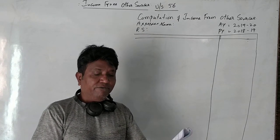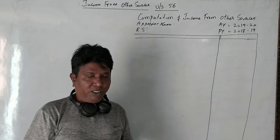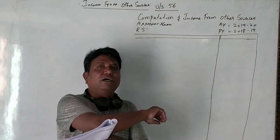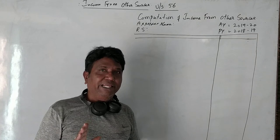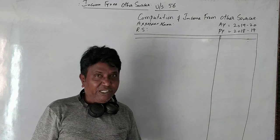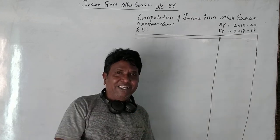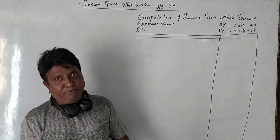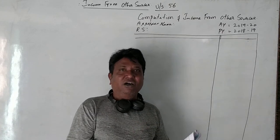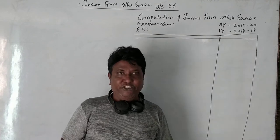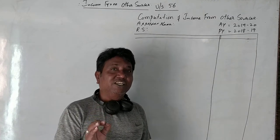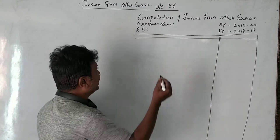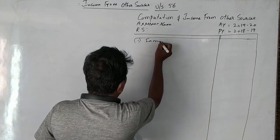Mr. Narayan submits the following particulars of income from other sources for the year ended 31st March 2019. Family pension from Government of Karnataka yearly is 40,000. Pension received by an employee from their employer till he dies is called pension, and pension is taxable under the head income from salaries. But if the employee dies and such pension is received by his spouse or wife, that is called family pension. Family pension is partly taxable and partly exempted — now how much is taxable and how much is exempted, that we need to understand.